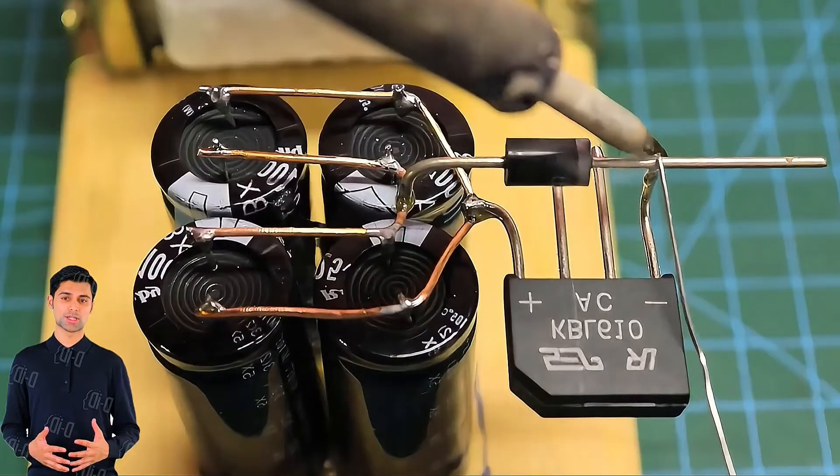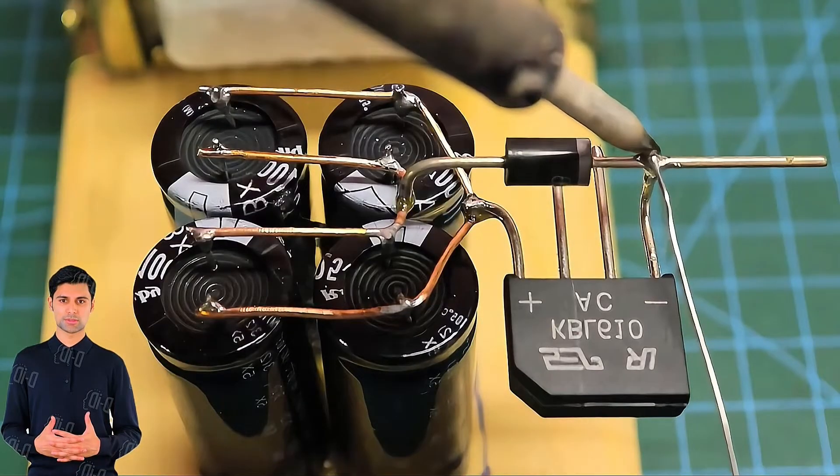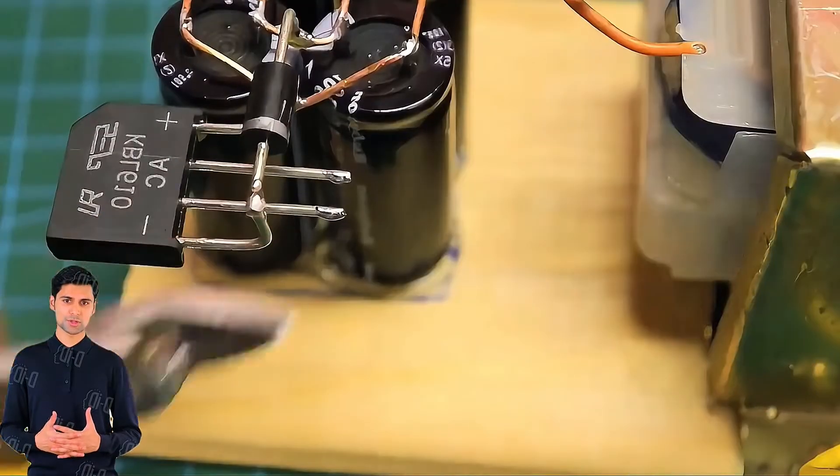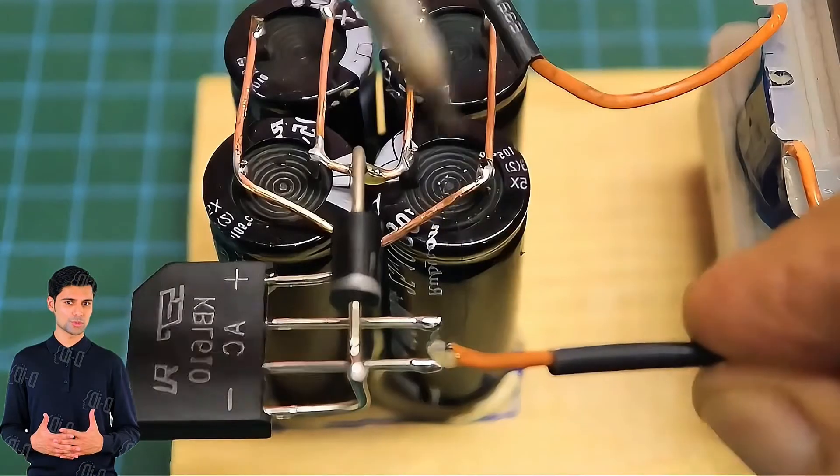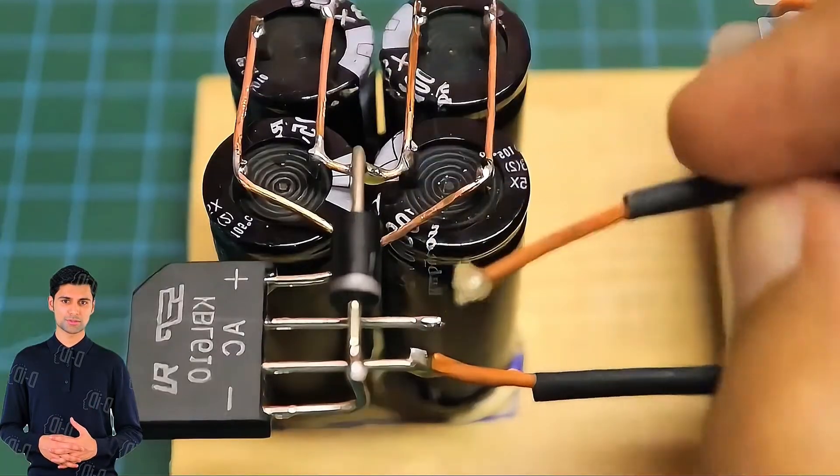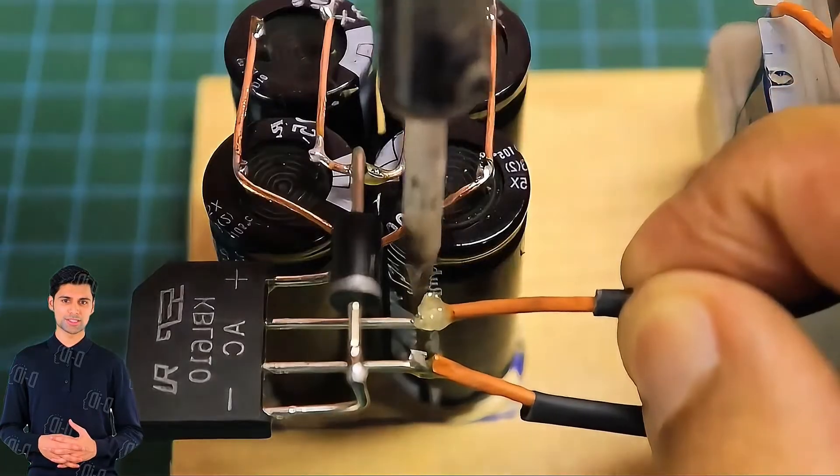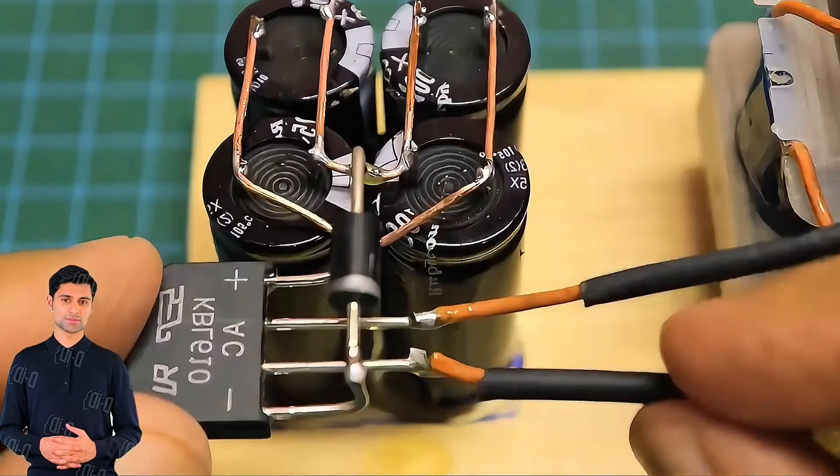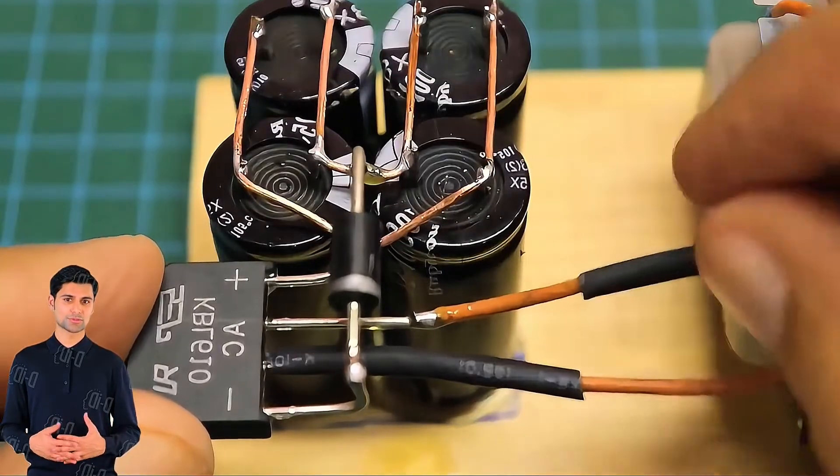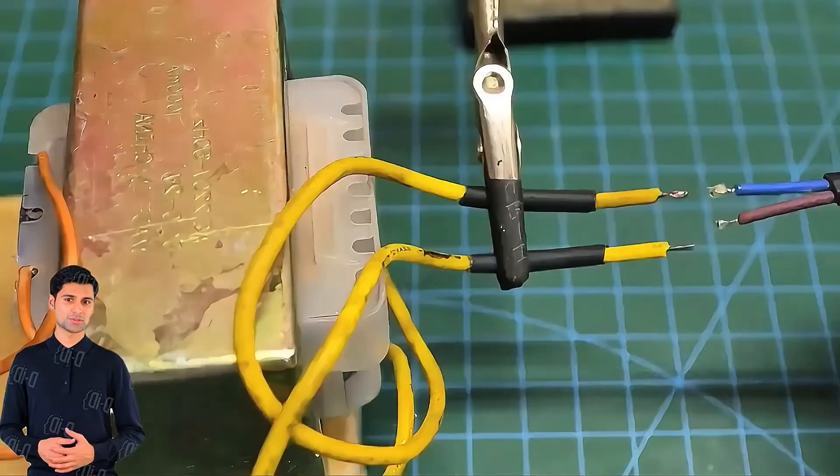The output positive electrode is marked on the side of the rectifier bridge. Negative is the output negative. The middle two corner pins are the AC inputs that connect the secondary windings of the transformer. There is no need to distinguish between positive and negative electrodes on the AC input side.